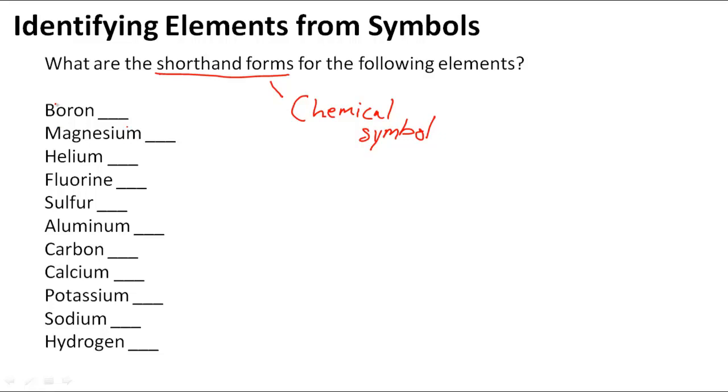Let's take a look at the 11 elements we have here and find their shorthand or chemical symbols. Now, to find the chemical symbols what you're going to need is a periodic table, so you can confirm that the element you're talking about actually has that one or two letter symbol.